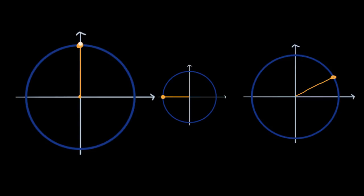Let's imagine we have some type of a tennis ball tethered with a rope to some type of a nail. If you were to try to move this tennis ball, it would just rotate around that nail and go along this blue circular path. The radius of this blue circle is six meters — you could view that as the length of the string.